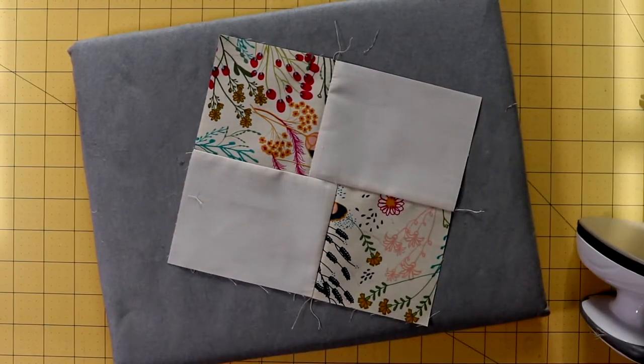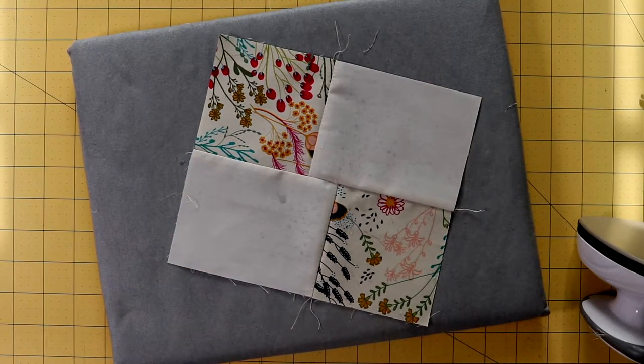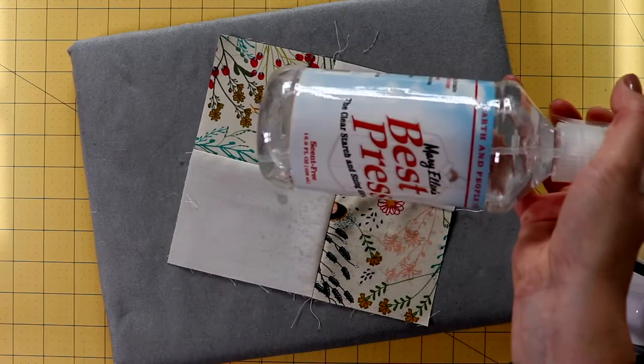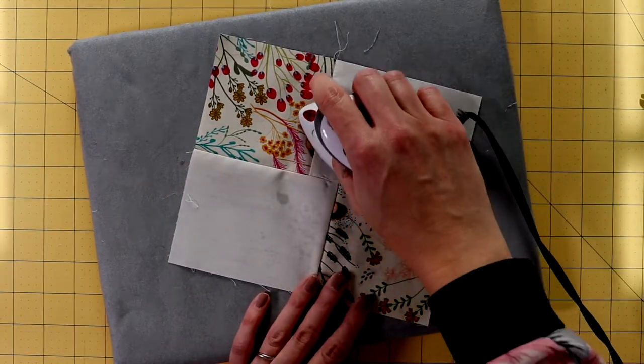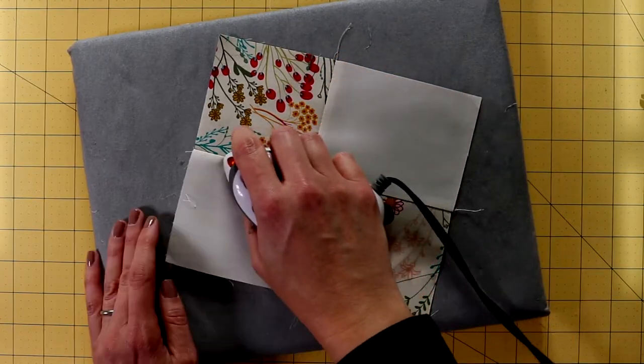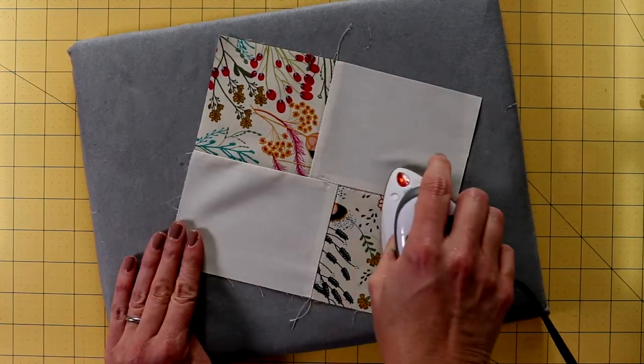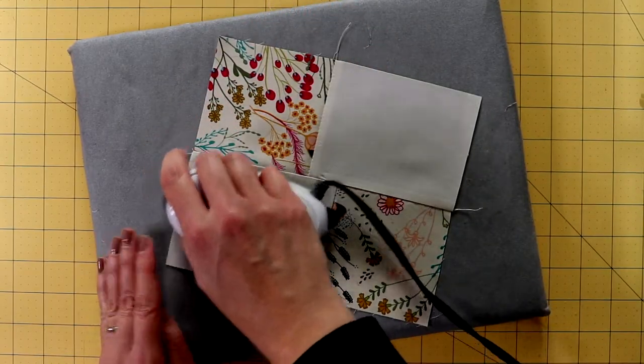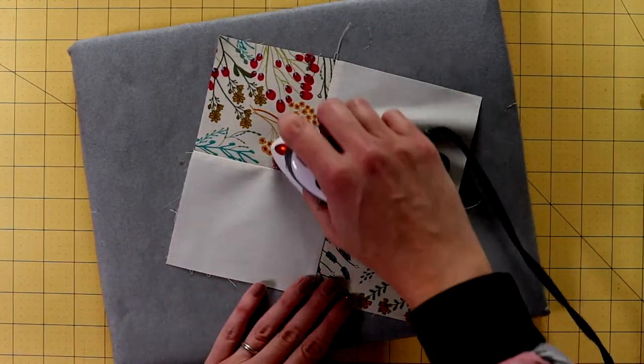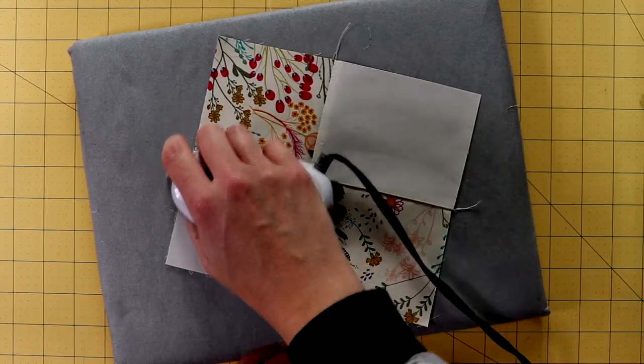This one I'm going to starch a little bit because it's looking a little lumpy. I usually like to use the Best Press. I find that's kind of the cleanest, easiest starch to use. Doesn't leave a residue like some others.